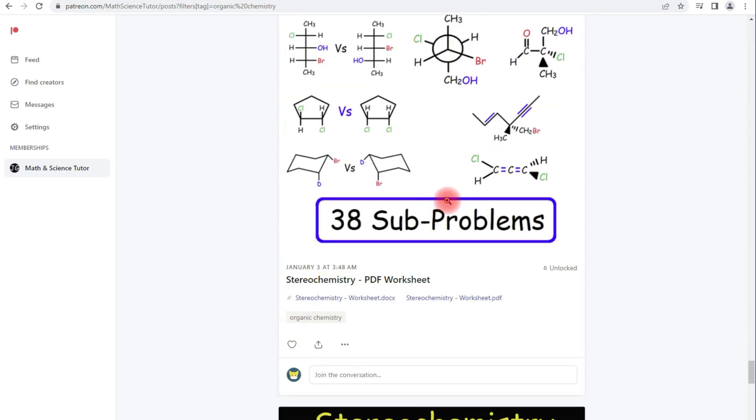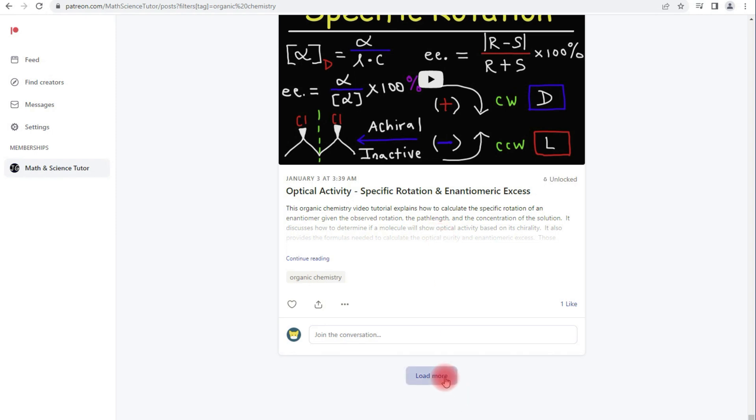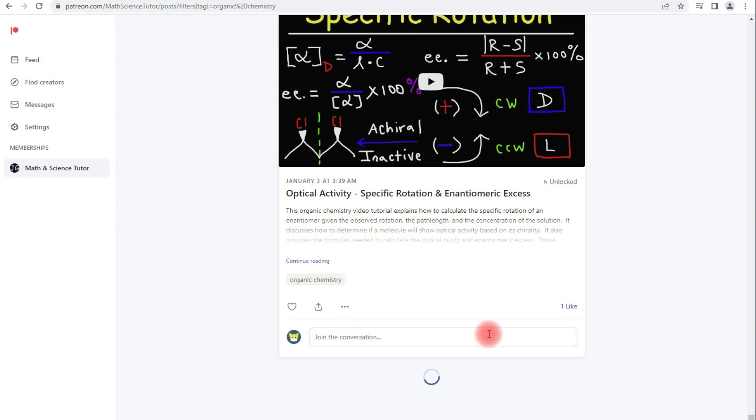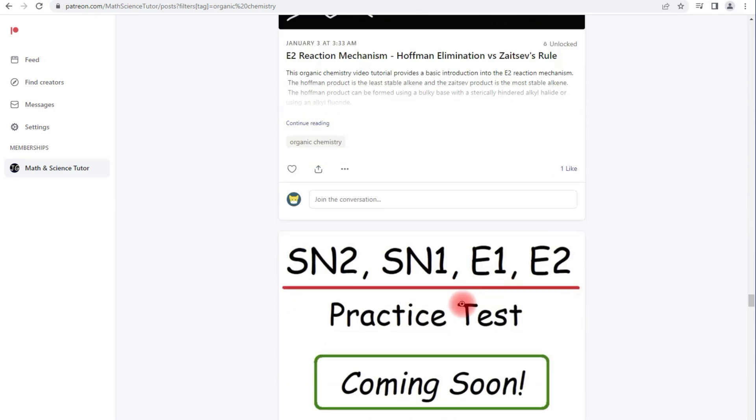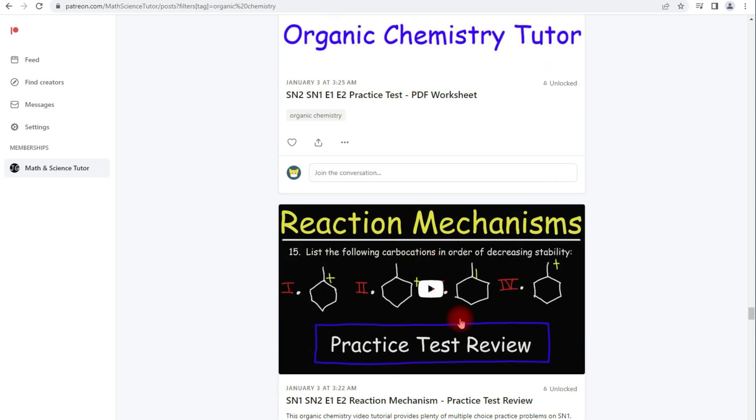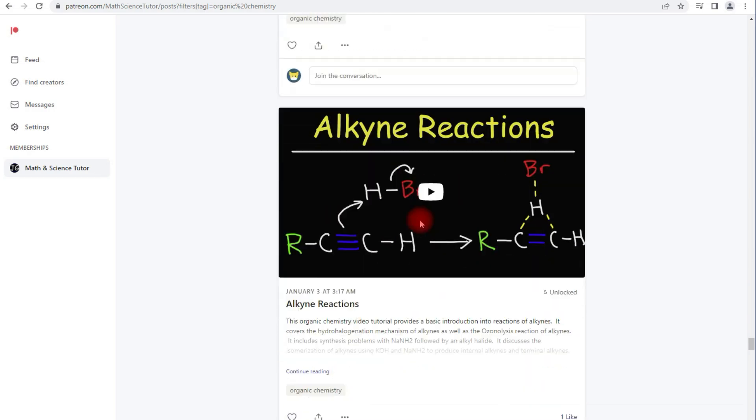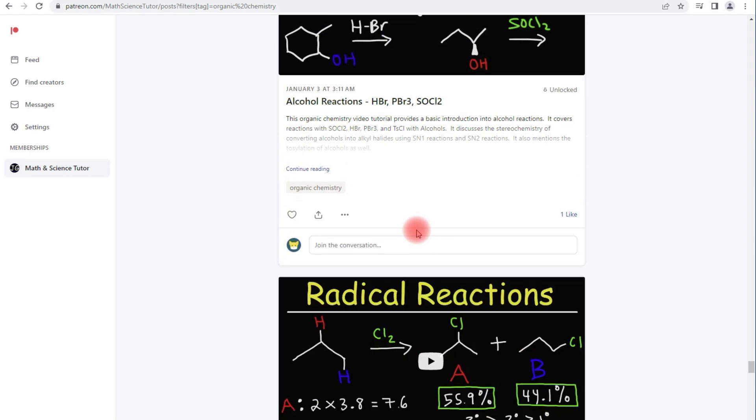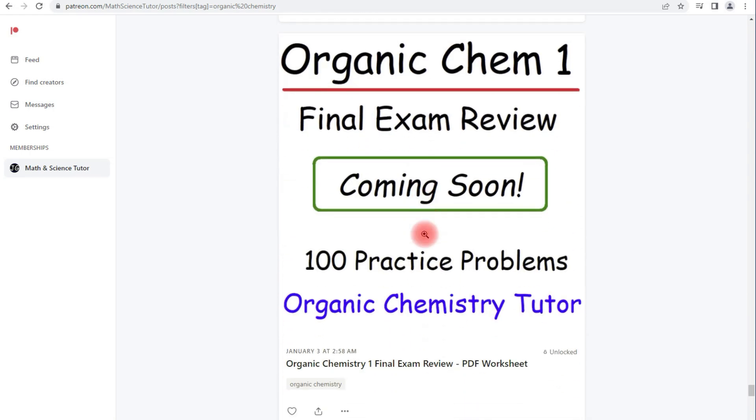Now I have other videos. Stereochemistry, specific rotation, SN1, SN2 reactions. There's a practice test on that, 77 practice problems. So here's the video with the practice test, but I haven't done the worksheet yet. We got alkene reactions, alkyne reactions, alcohol reactions, radical reactions, and then my organic chemistry one final exam review video.